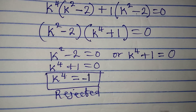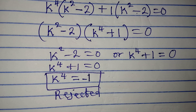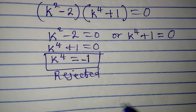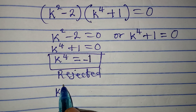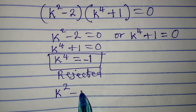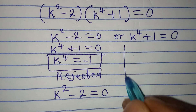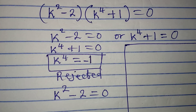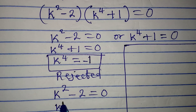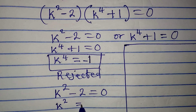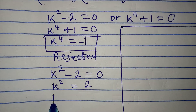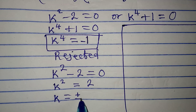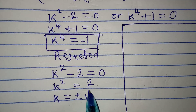The one that gives us a real solution is k² minus 2 equals 0. From here k² equals 2, and this means k equals positive or negative square root of 2.